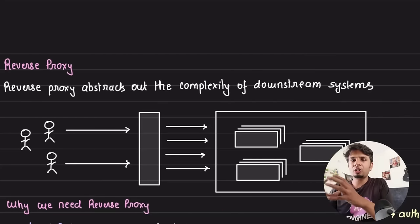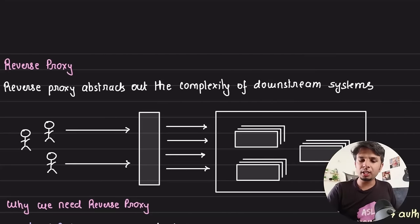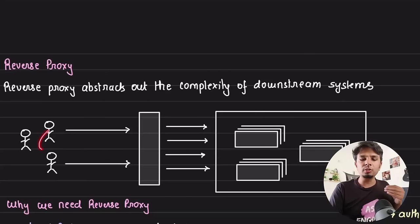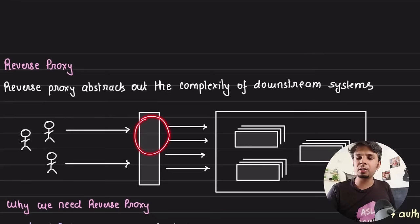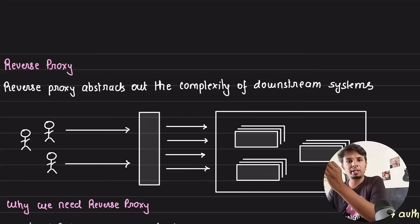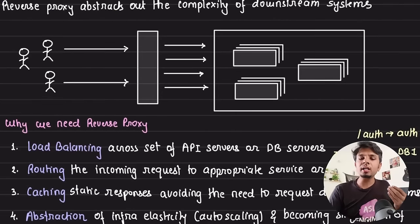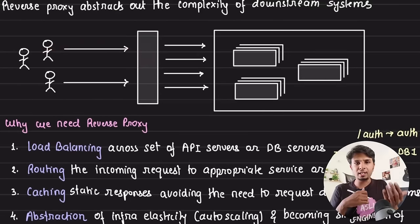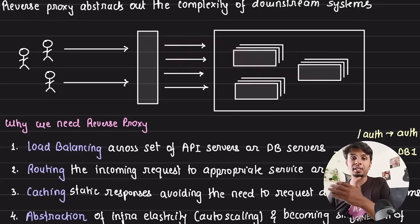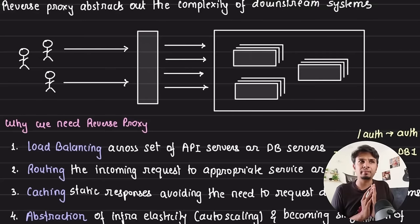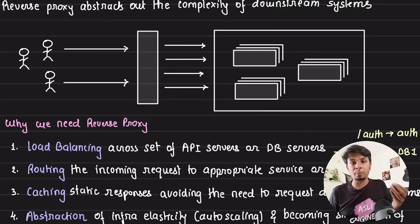The second type of proxy is a reverse proxy, which abstracts out the complexities of the downstream systems. Users connect to the reverse proxy, and it is the reverse proxy's responsibility to route the request to the corresponding node. A very common example is a load balancer — you connect to it, and depending on the load balancing algorithm, it forwards the request to one of the backend servers, abstracting out how many servers exist.